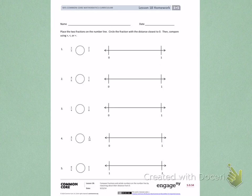Place the two fractions on the number line. Circle the fractions with the distance closest to zero. Then compare using greater than, less than, or equal. Number 1.